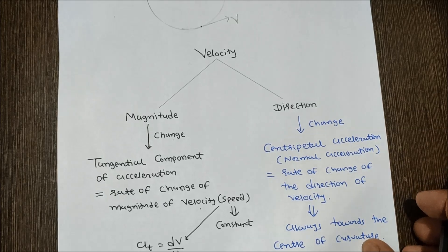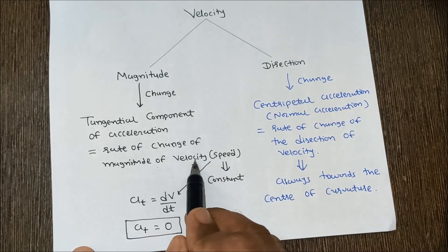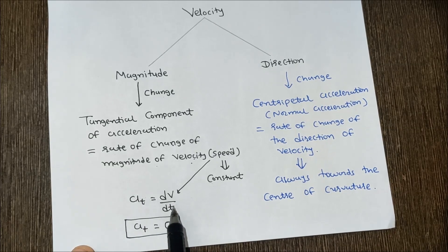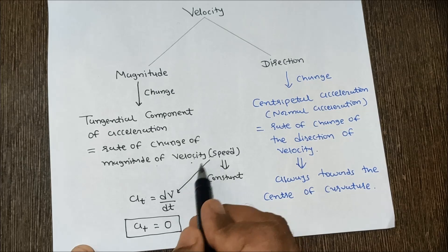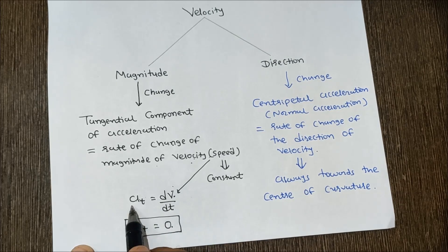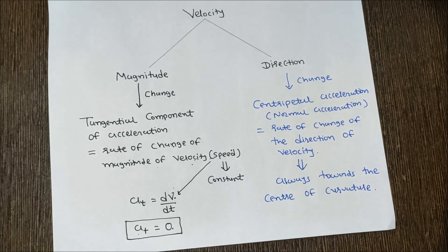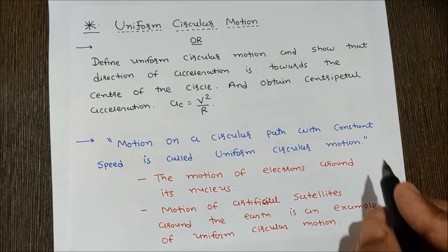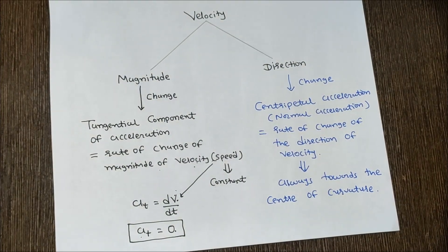Tangential acceleration is zero because it equals dv/dt, where V is the speed. If speed is constant, the derivative is zero. In uniform circular motion, speed is constant, so the tangential component of acceleration is zero.